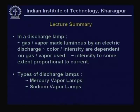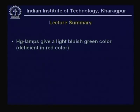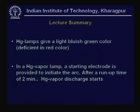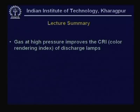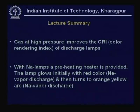Mercury vapor lamps give a characteristic bluish-green color and have a starting electrode; typical run-up time these days is about 2 minutes thanks to modern technology. Higher gas pressure improves color rendering as mercury vapor lamp radiation shifts toward the mid-spectrum. For sodium lamps, a preheating heater is provided; the initiating vapor is neon, giving a red color initially, which then turns to the characteristic orange-yellow color of sodium.